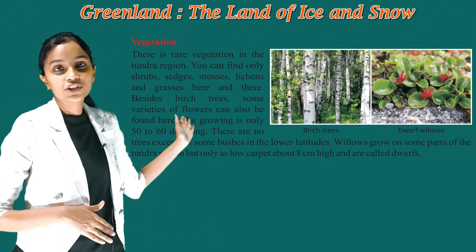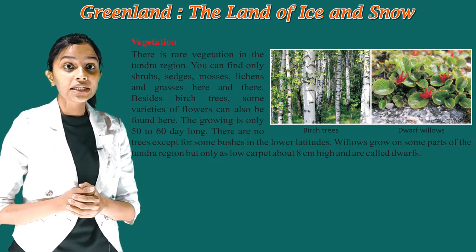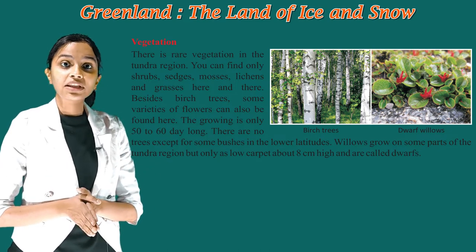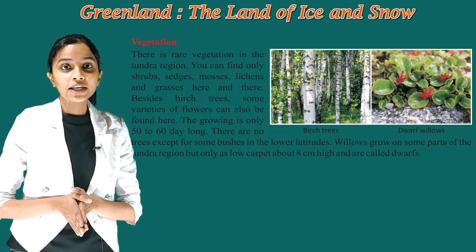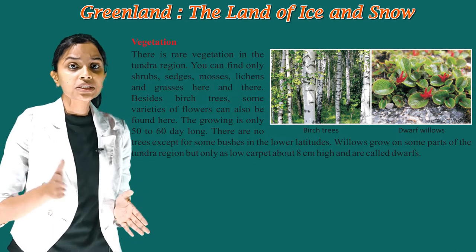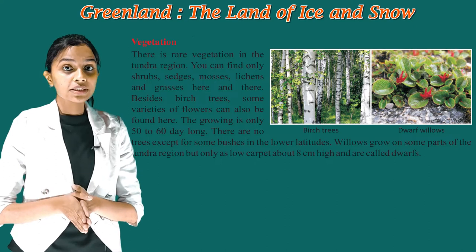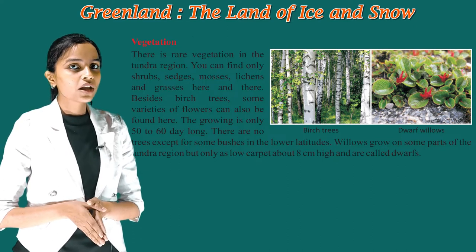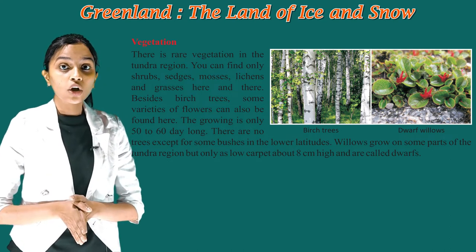Now let's see the vegetation. There is rare vegetation in the Tundra region. You can find only shrubs, sedges, mosses, lichens, and grasses here and there. Besides birch trees, some varieties of flowers can also be found here. The growing season is only 50 to 60 days long. There are no trees except for some bushes in the lower latitudes. Willows grow on some parts of the Tundra region, but only as a low carpet about 8 centimeters high, and are called dwarfs.